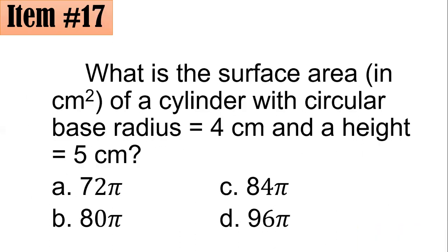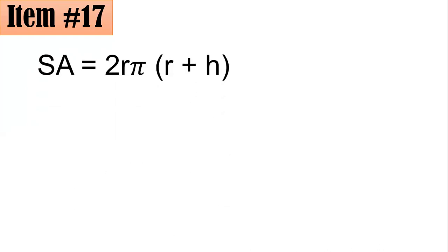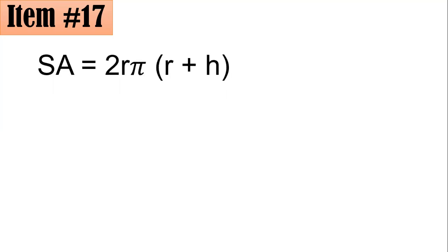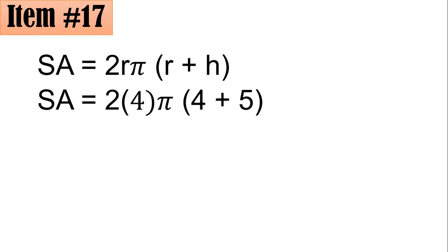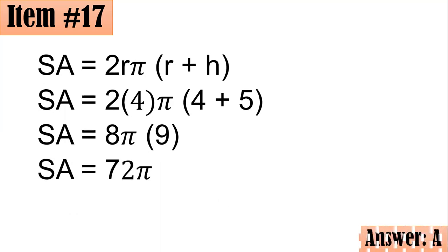Number 17. What is the surface area in cm squared of a cylinder with circular base radius of 4 cm and height of 5 cm? Is it 72π, 80π, 84π, or 96π? We recall that the surface area of a cylinder equals 2πr times (r plus h). By substitution: 2 times 4 times π times (4 plus 5), which is 8π times 9, giving 72π. Letter A.